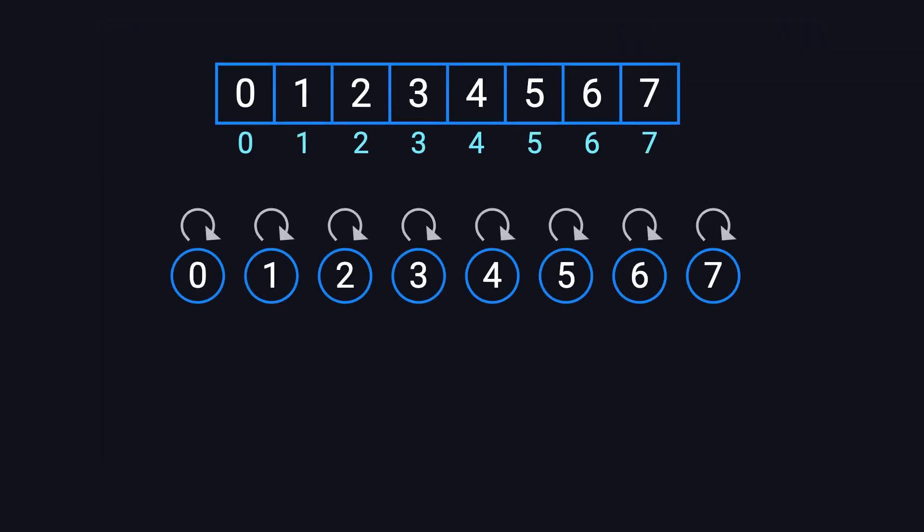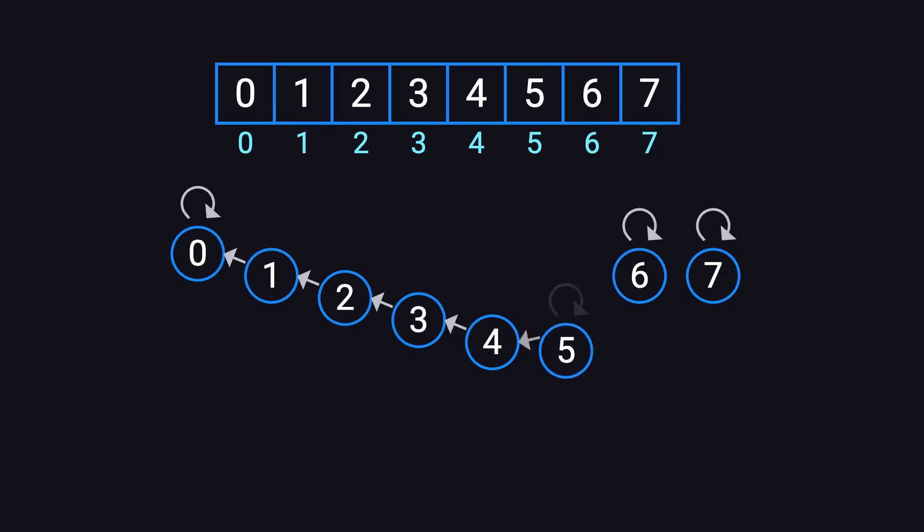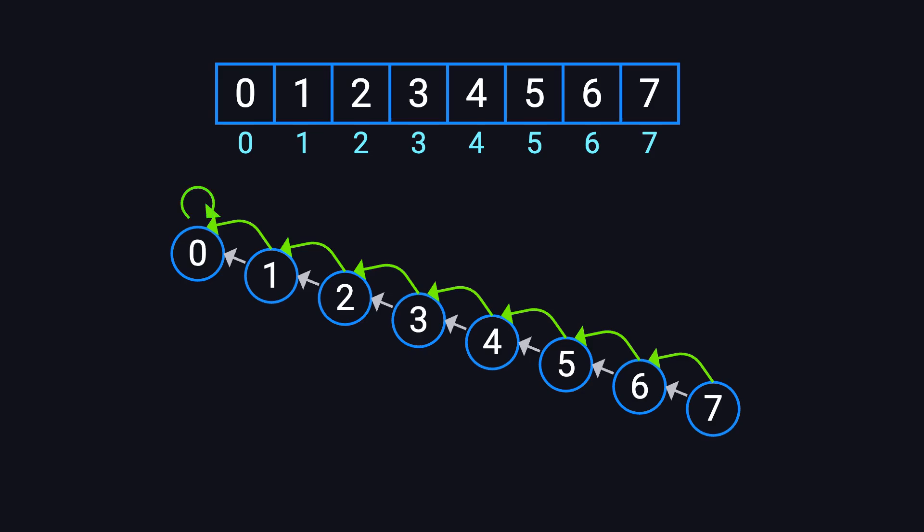Let's go back to the earlier example. Imagine we perform a series of basic union operations. First, union(0, 1). Then, union(1, 2). Then, union(2, 3). And so on, all the way up to union(6, 7). What happens is that the tree starts to stretch out into a long chain. So when we call find(7), we have to walk up the chain one step at a time, from 7 to 6, 6 to 5, and so on, until we finally reach the root. In this worst-case scenario, the time complexity of find becomes O(n), which is linear.